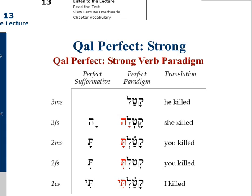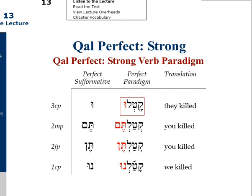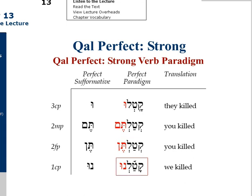Looking at handout 13c — this is section 13.5 in the grammar — listen carefully to the pronunciation of each form of the paradigm. We begin with the qal-perfect third masculine singular form, katal. The third feminine singular form, katala. Second masculine singular, katalta. Second feminine singular, katalt. First common singular, katalti. Third common plural, katalu. First common plural, katalnu.